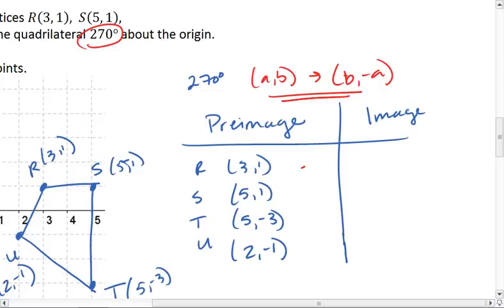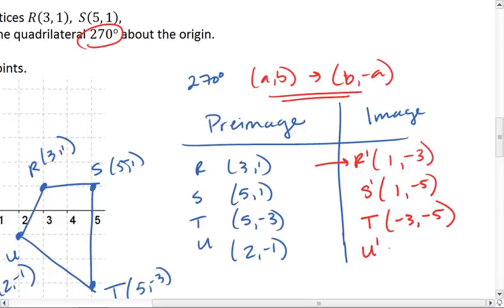We're going to use this rule to map onto our image. So 3, 1, the 1 and 3 switch spots, and the 3 becomes negative. And this is R prime. For S, S prime, the 1 and 5 switch spots, and the 5 becomes negative. For T prime, negative 3 and 5 switch spots, and the 5 becomes negative. And for U prime, our negative 1 and 2 switch spots, and the 2 becomes negative.